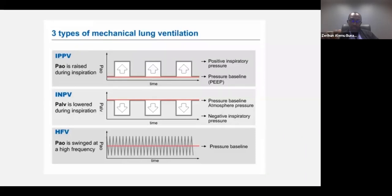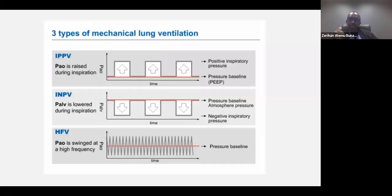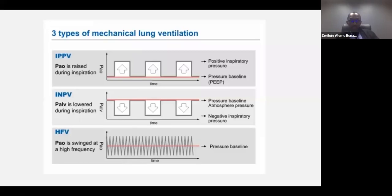If you see the pressure tracing dipping below zero, that means the patient is trying to initiate a breath. If the pressure tracing is being pulled down, that means the patient is trying to get more breath on top of what the ventilator is giving.